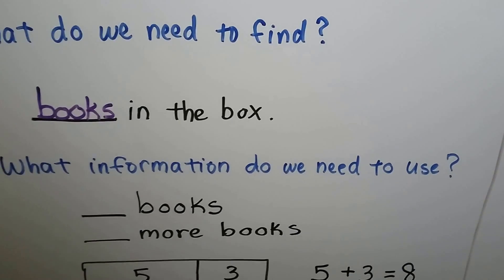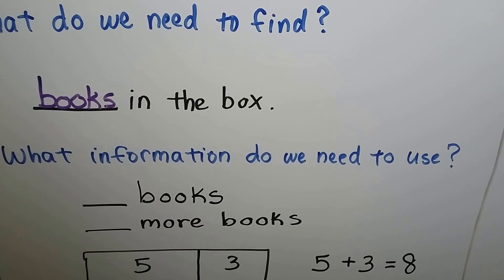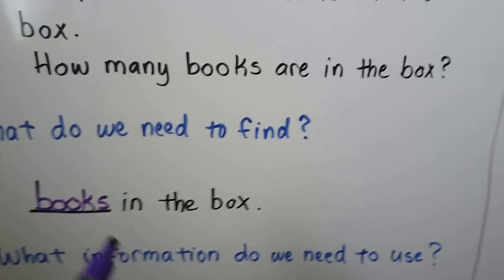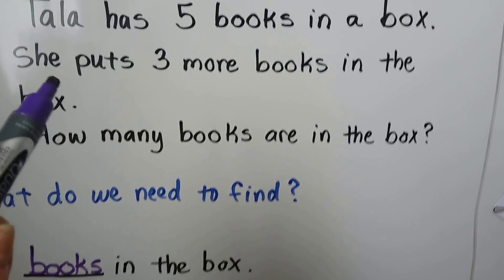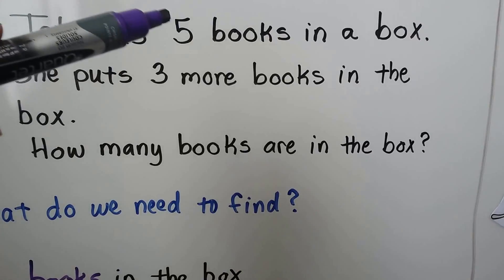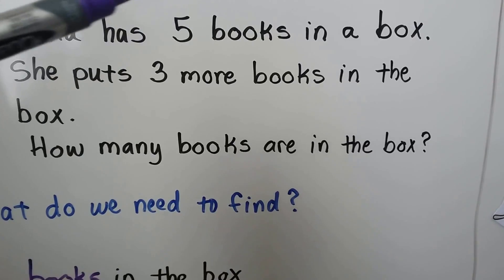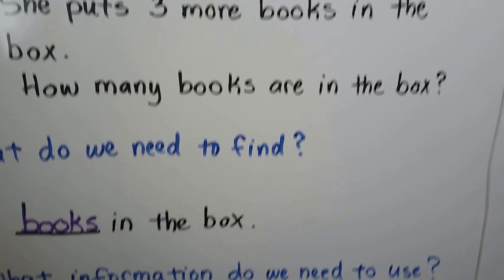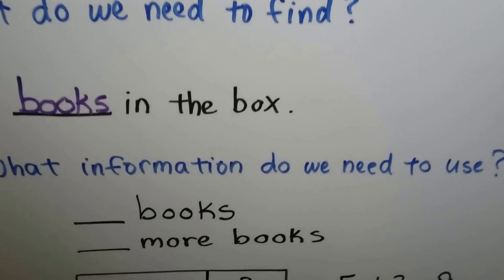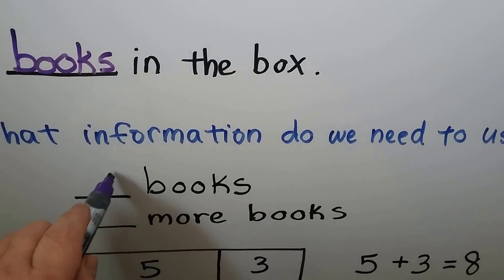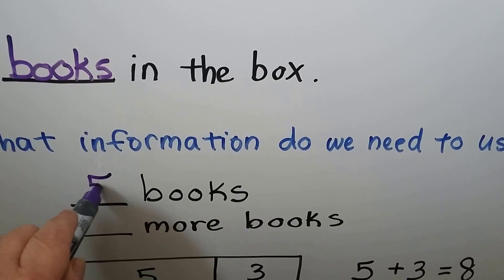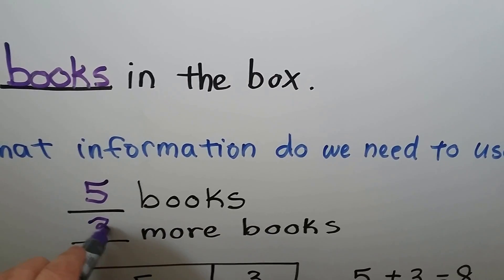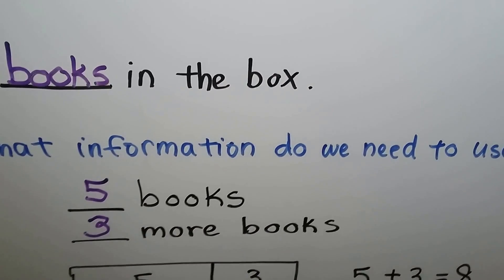What information do we need to use? To know how many books are now in the box, we need to know that there were five books and three more books.